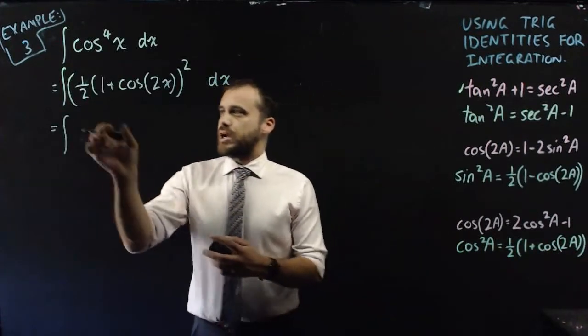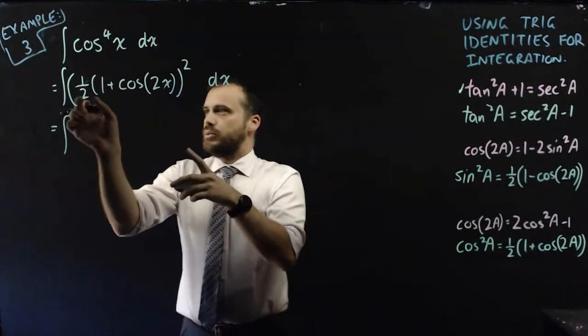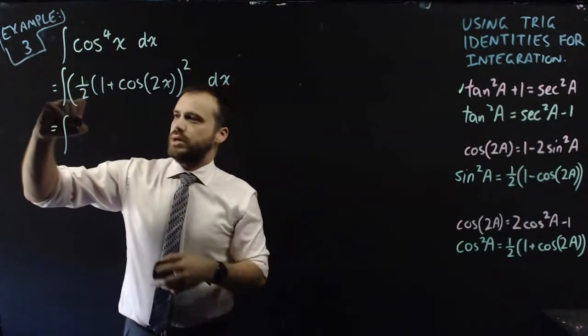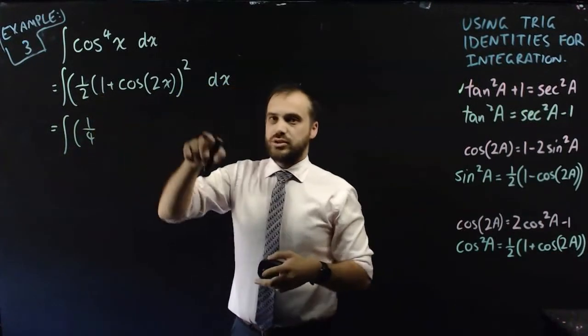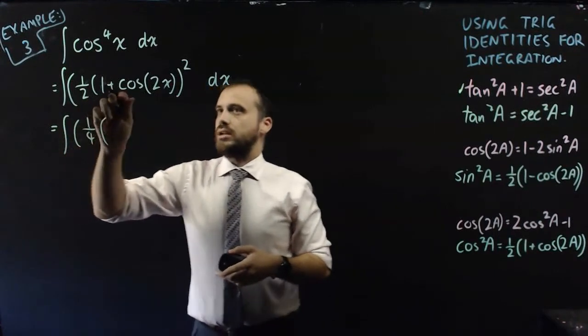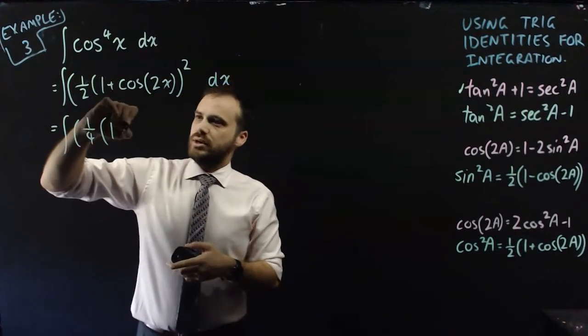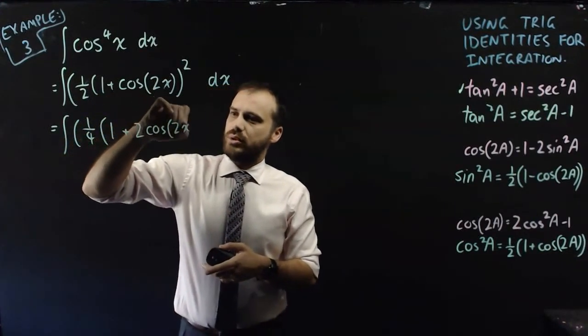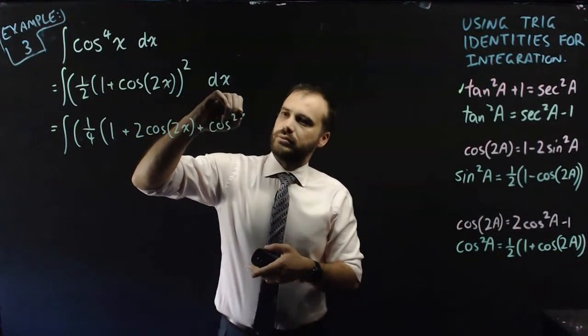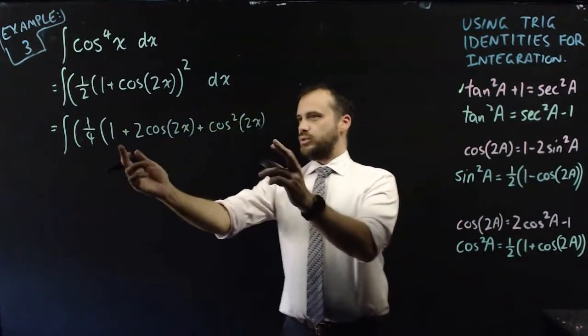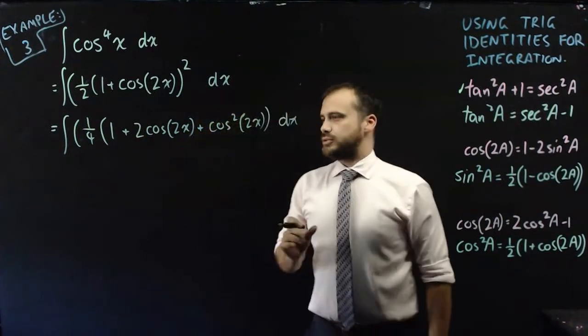Just to make it clear, cos²x to the power of two is the same as cos to the power of 4x. And I'm going to replace this cos²x with this bit here. Now when I do that, you've got to be a bit careful with your brackets. It's one half times all of that and then all squared, which means that we can square this, so one half squared is one quarter, and then we can square this, one plus cos(2x). Now when we square that, we're going to get one, we're going to get cos(2x) times one times two, so 2cos(2x), and then we're going to get cos²(2x).